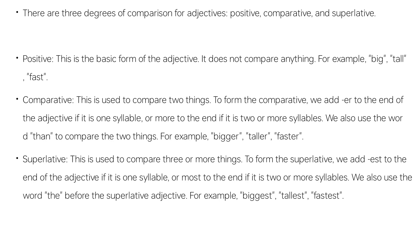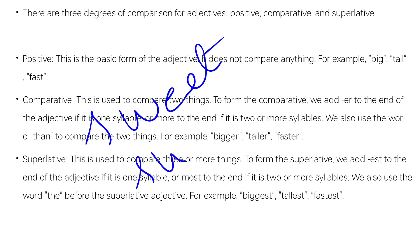We are talking about the Positive form. When we have a single adjective, we are talking about a single thing — the adjective we use in Positive Form. This means words like Tall, Big, Small. For example: Sweet, Sweeter, Sweetest.